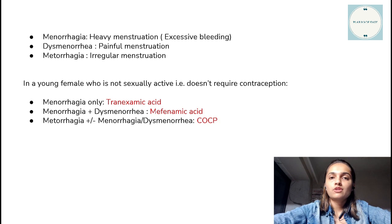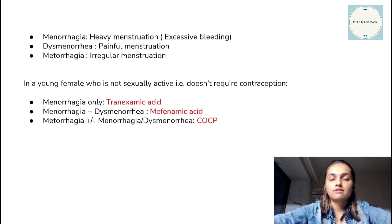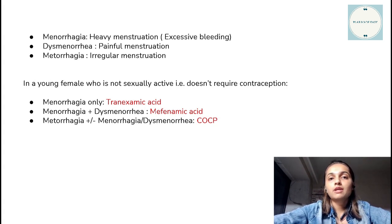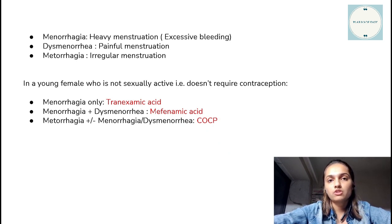There are a few important terms frequently used in gynaecology: menorrhagia — heavy or excessive bleeding; dysmenorrhoea — painful bleeding; and metrorrhagia — irregular menstruation. For a young female who is not sexually active: if she presents with only menorrhagia, prescribe tranexamic acid; if she presents with dysmenorrhoea, prescribe mefenamic acid; if she presents with metrorrhagia with or without dysmenorrhoea or menorrhagia, prescribe combined oral contraceptive pills.